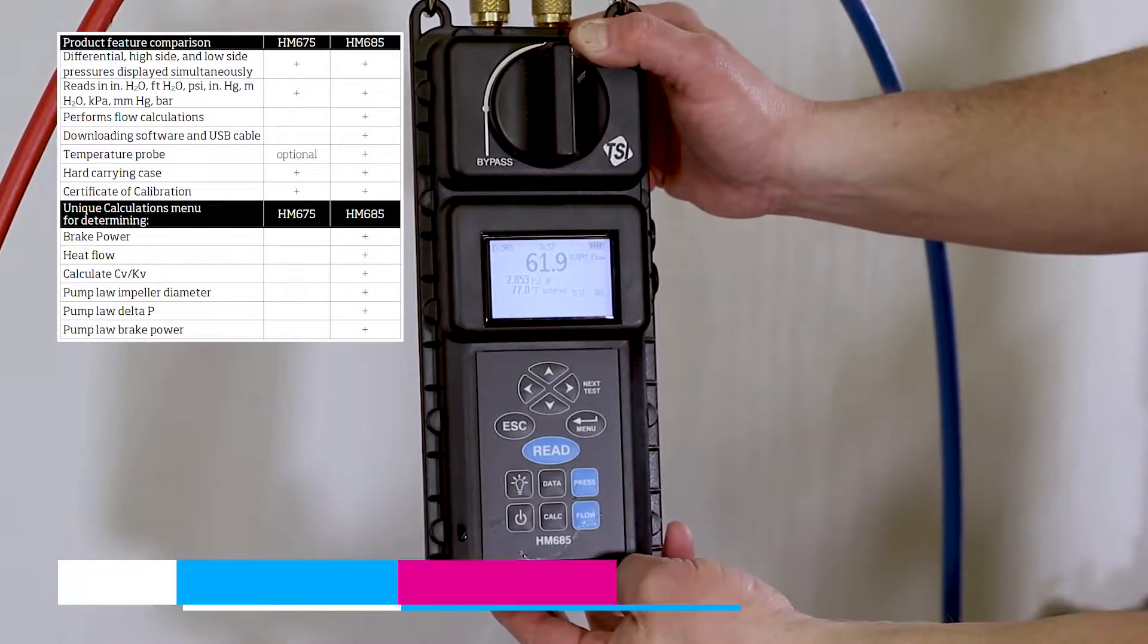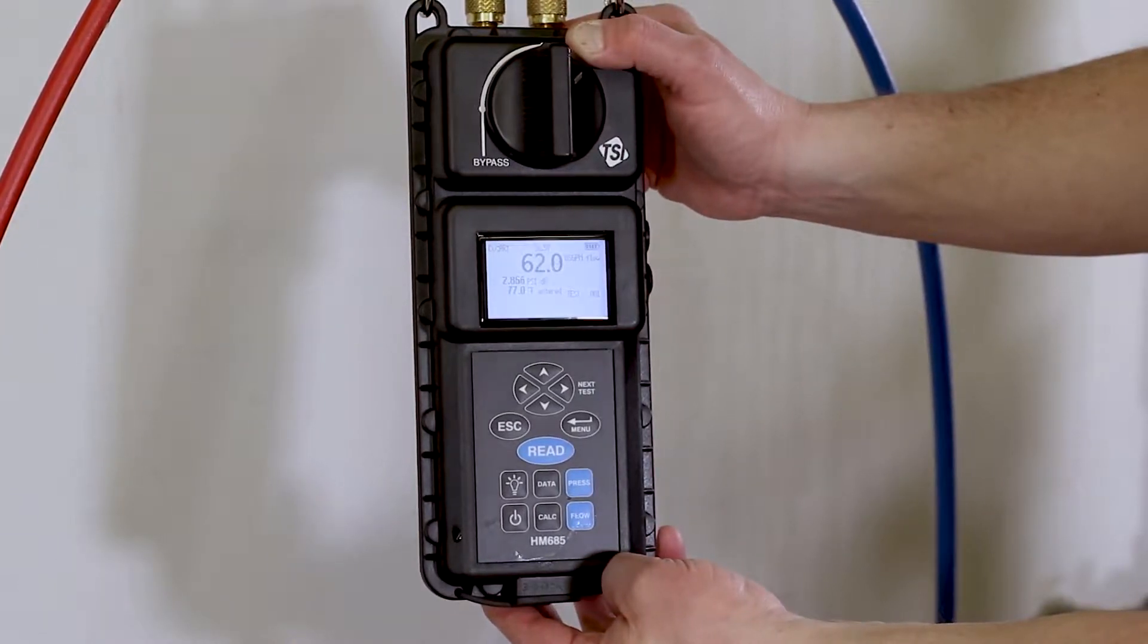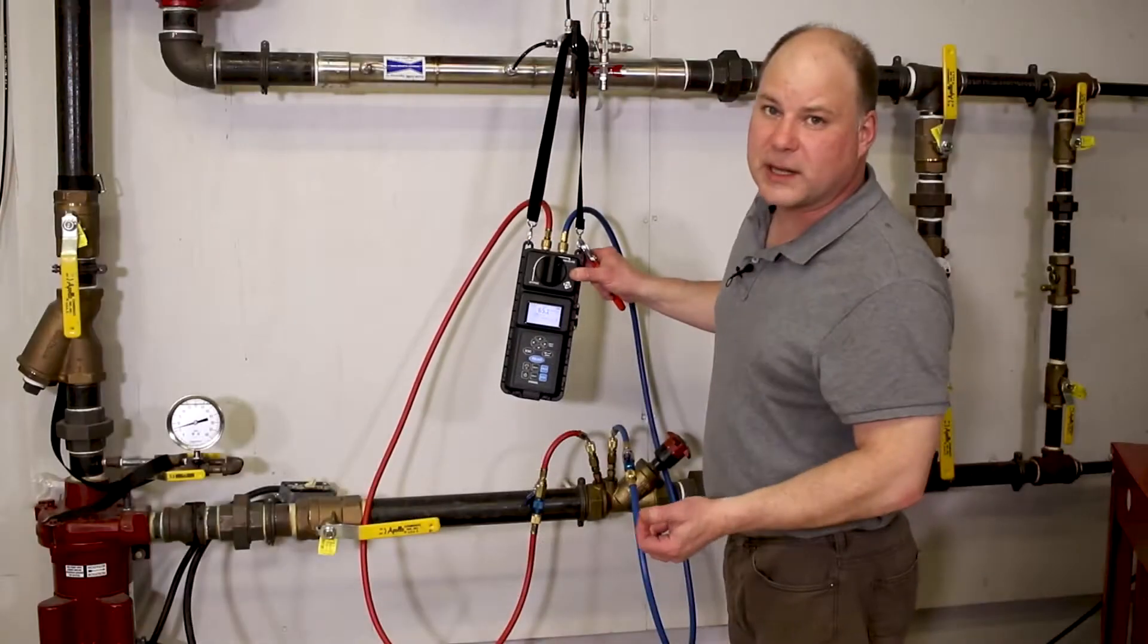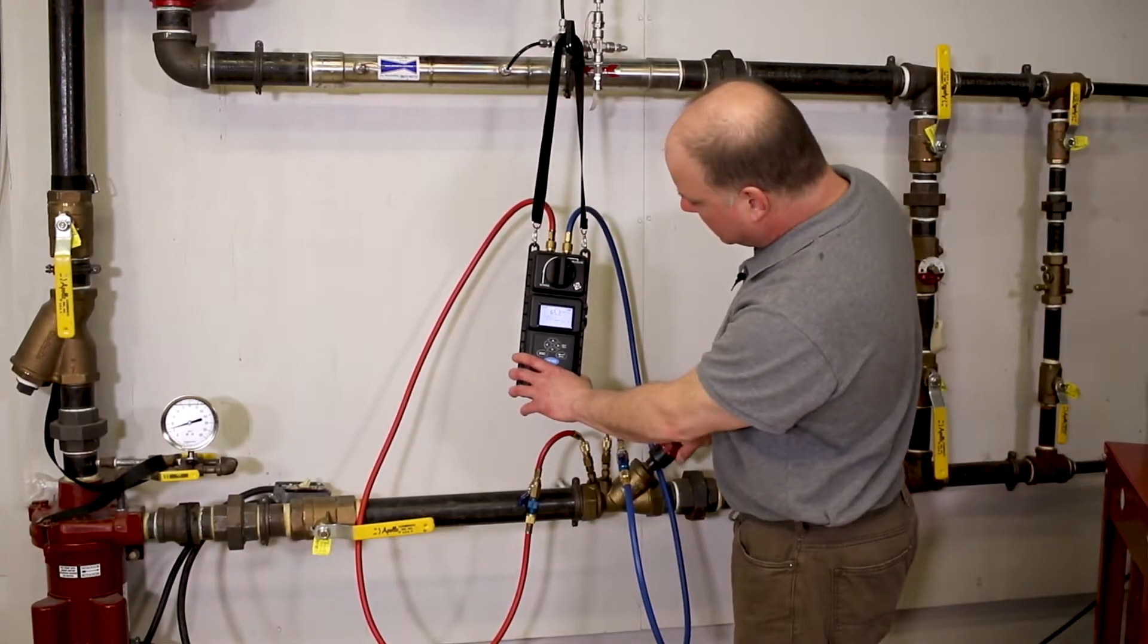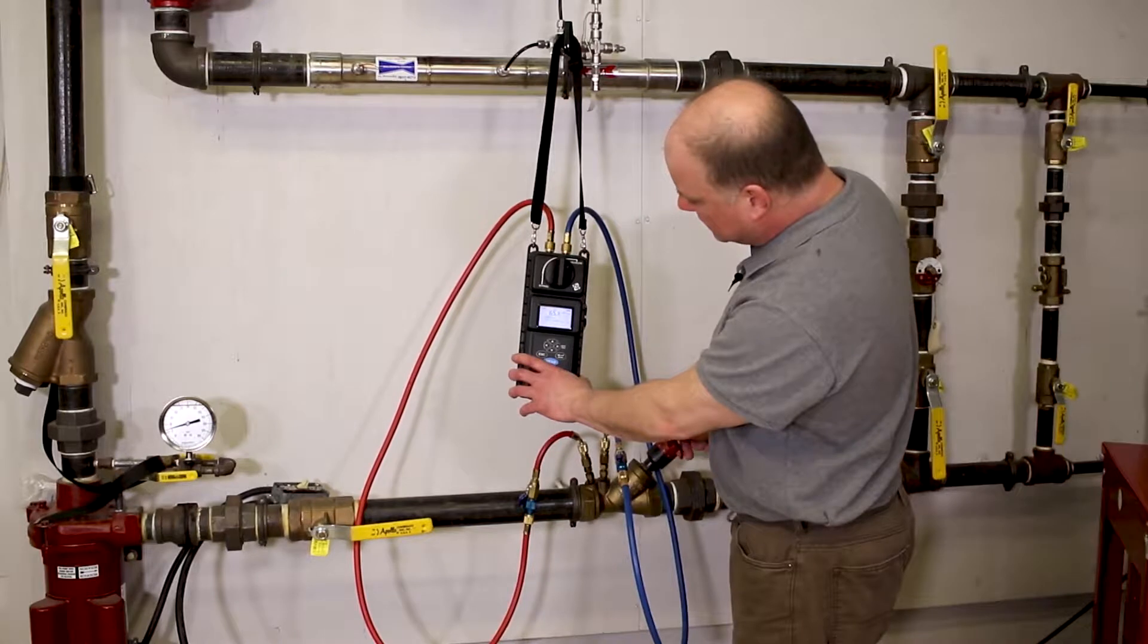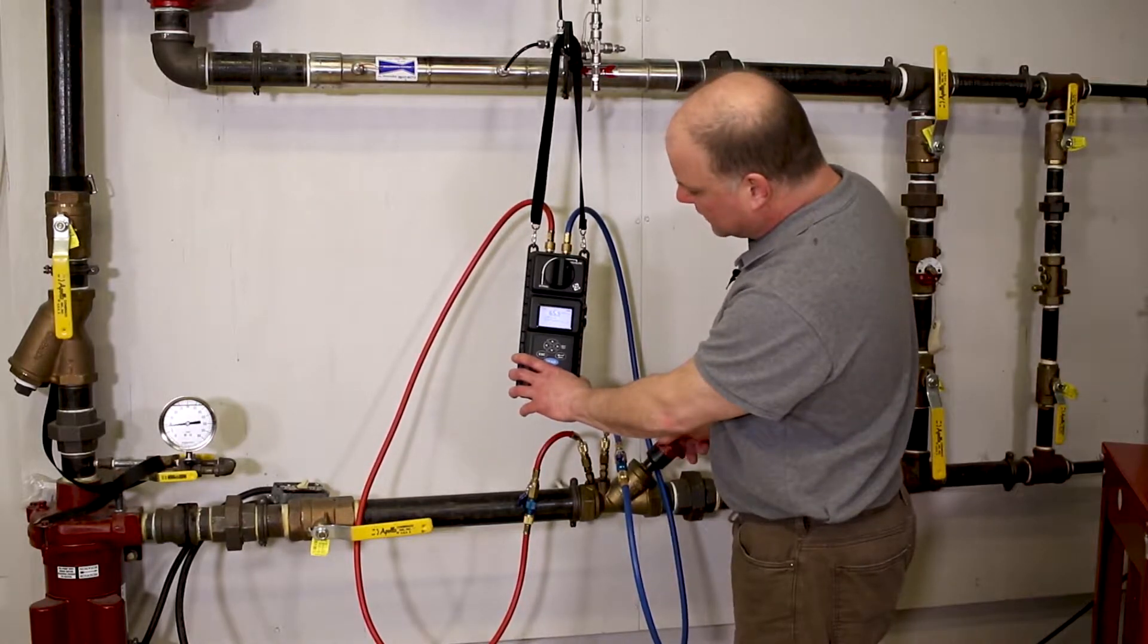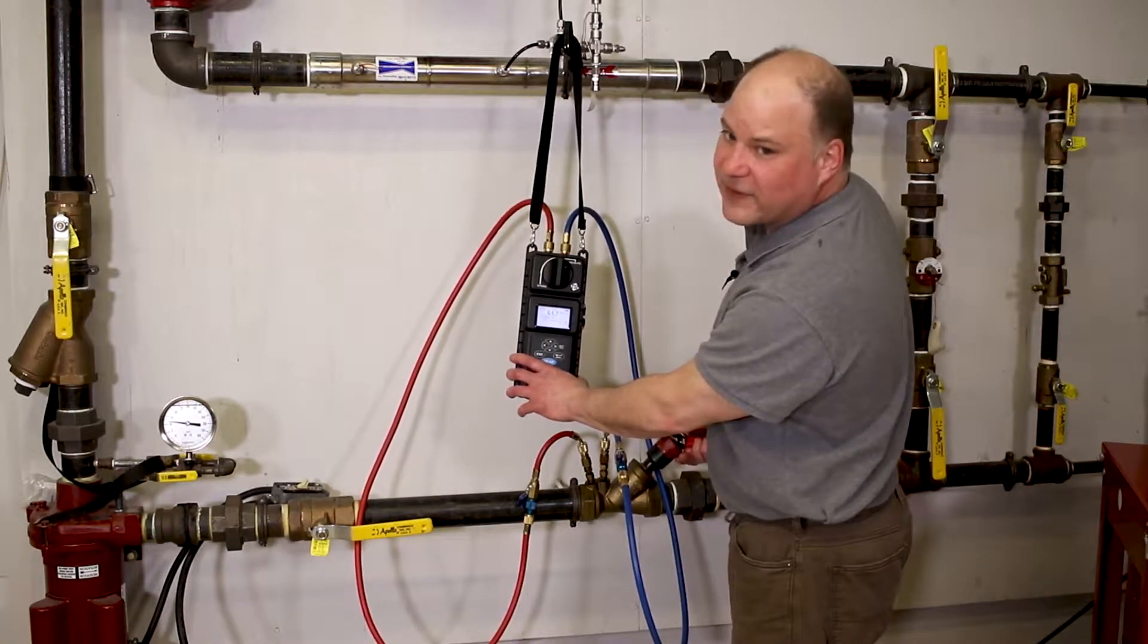I've programmed that in. I go to my flow setup, flow measurement, and we can see the flow in gallons per minute. At this point we're measuring 65.2. By adjusting the stem position, we'll be able to change the pressure drop across the valve and the flow.